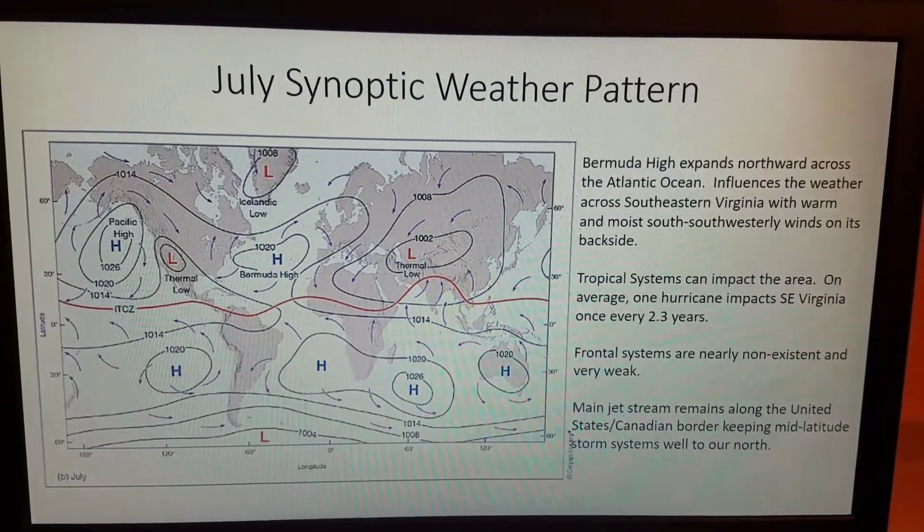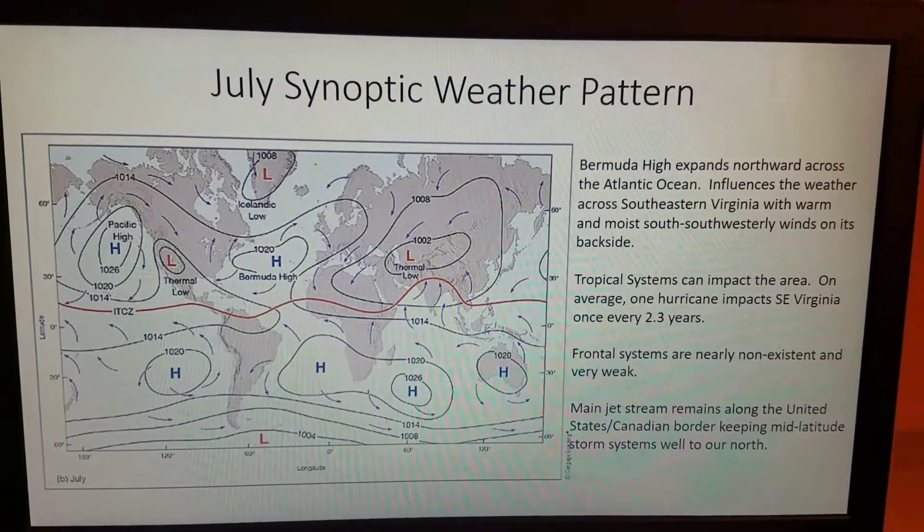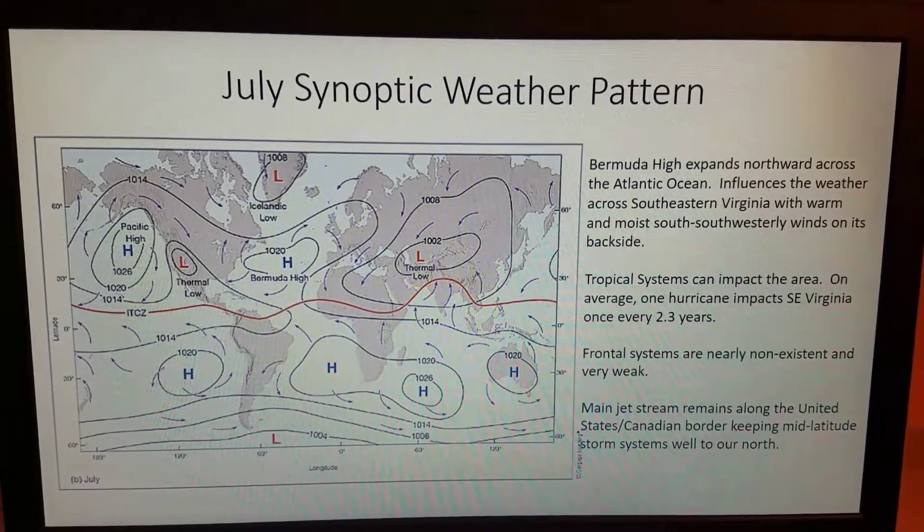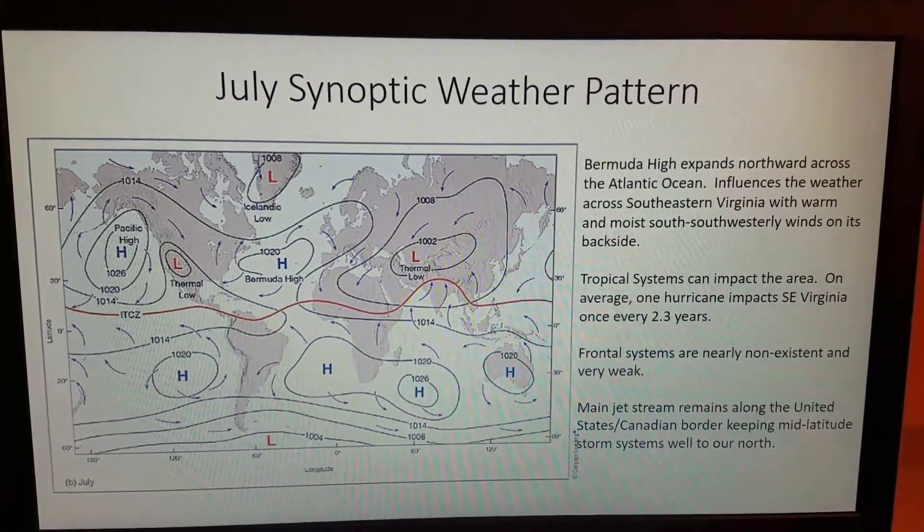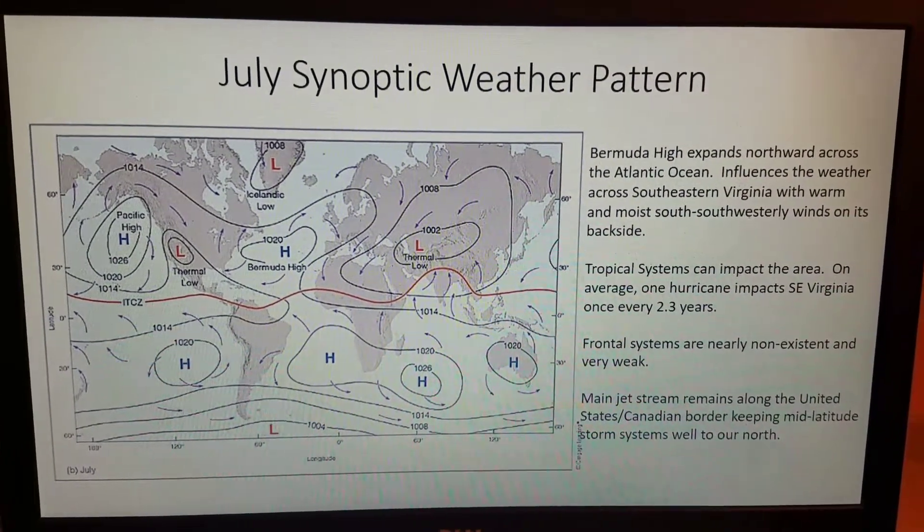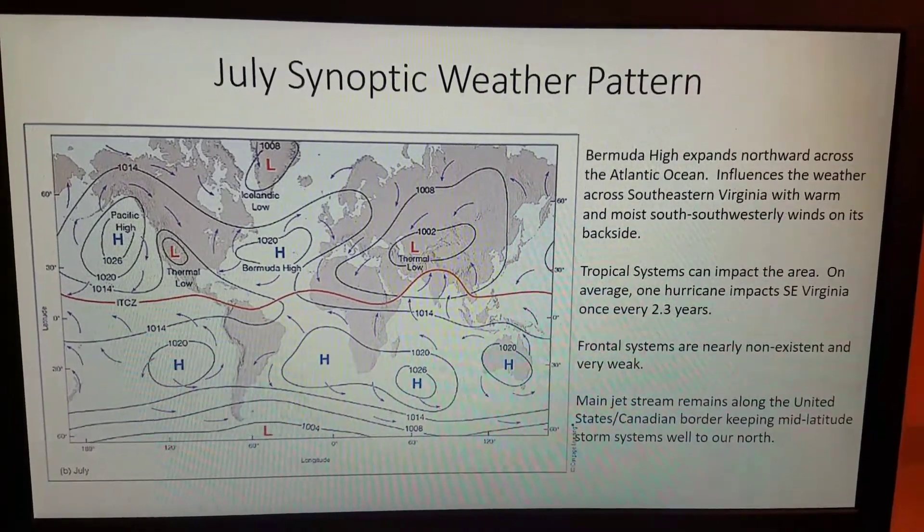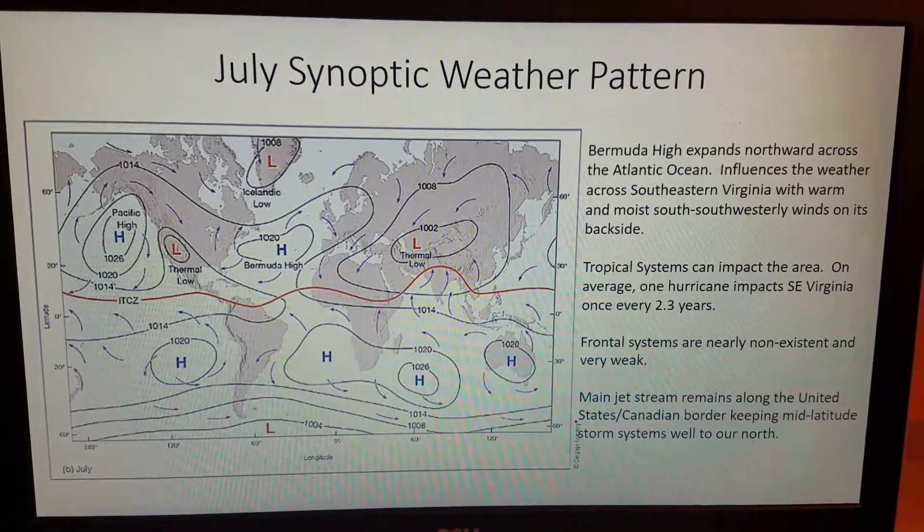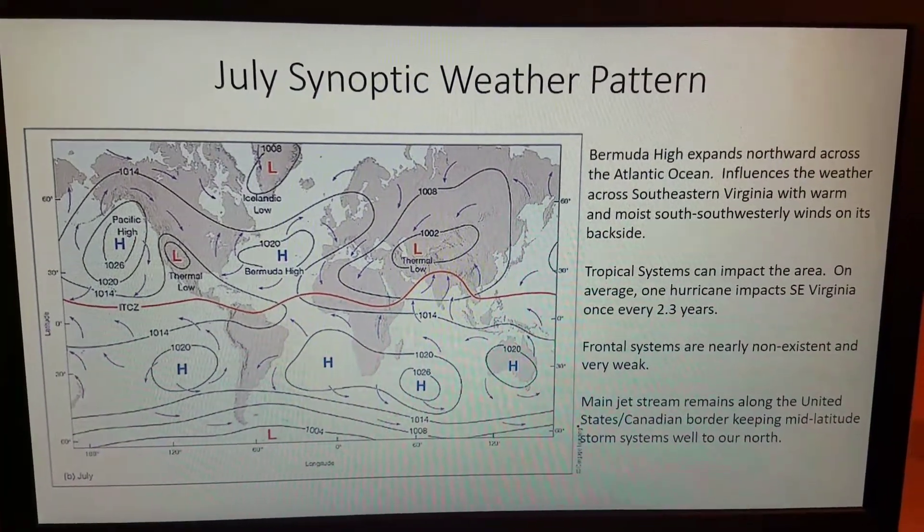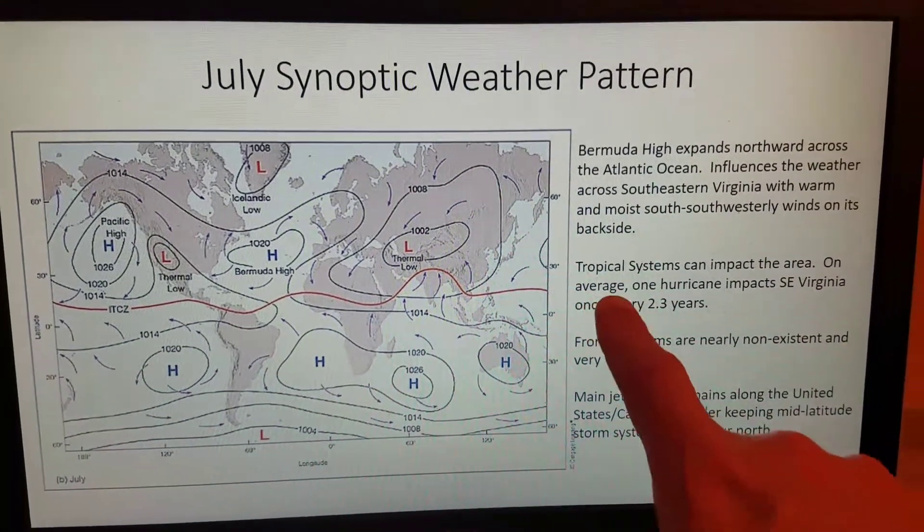In July the Bermuda High expands northward across the Atlantic Ocean and influences the weather across southeastern Virginia with that warm and moist south-southwesterly winds on its backside. When you get that south-southwest wind persistently in the month of July, that tends to lead to more of the warm, muggy, really humid conditions that's very typical of what you see this time of year.